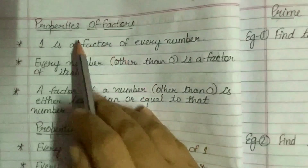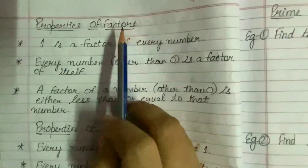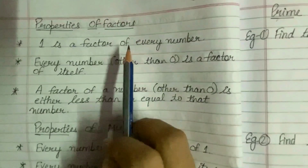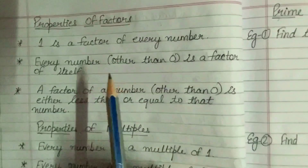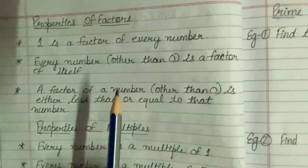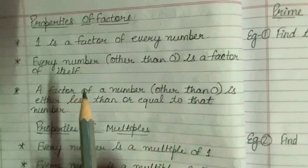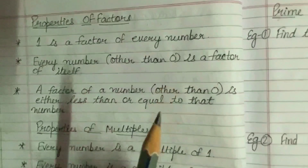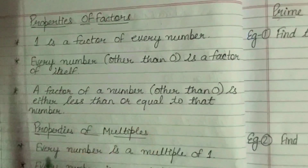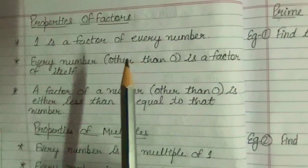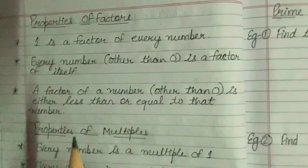Next topic is properties of factors. But before that, what are factors and multiples? When a number divides another number exactly — that is, when the remainder is 0 — the divisor is the factor of the dividend, and the dividend is a multiple of the divisor.